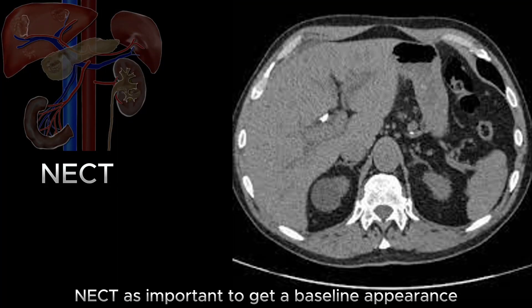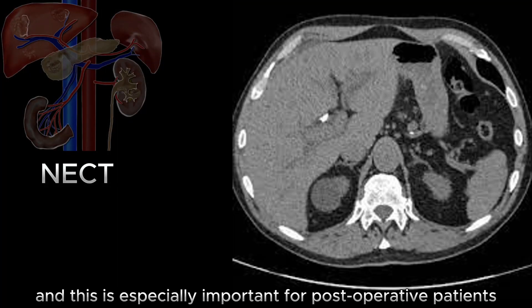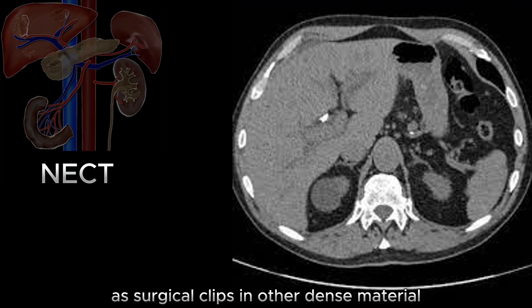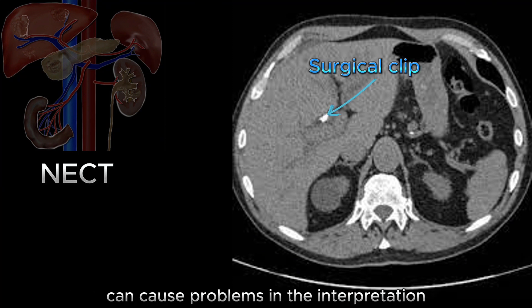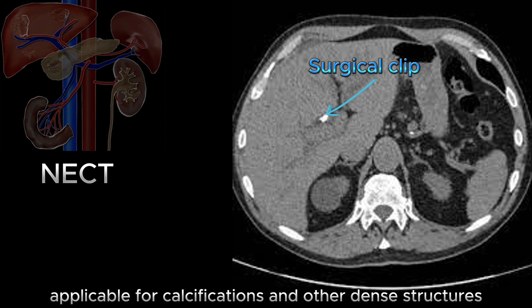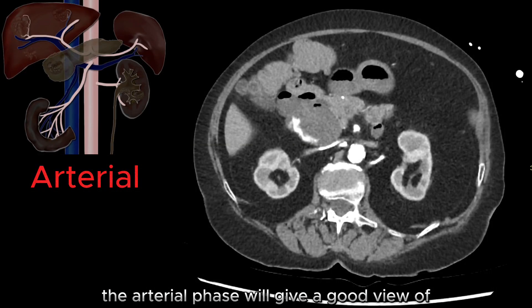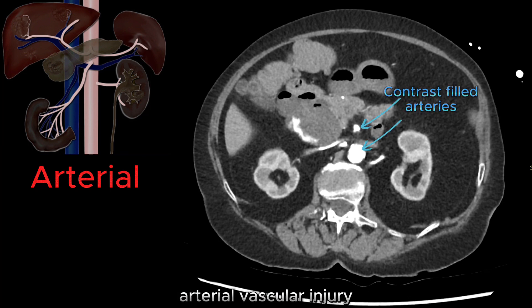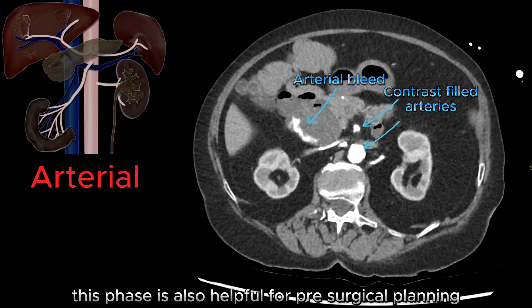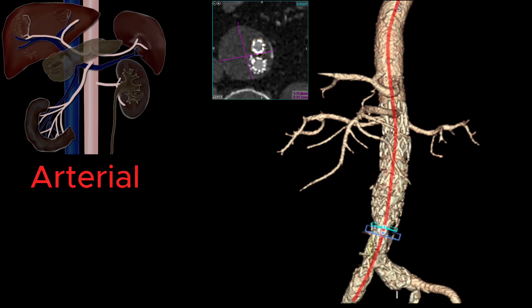Non-enhanced CT is important to get a baseline appearance, and this is especially important for postoperative patients, as surgical clips and other dense material can cause problems in the interpretation. This is also applicable for calcifications and other dense structures. The arterial phase will give a good view of the vascular anatomy, arterial vascular injury, and the potential source of arterial bleed. This phase is also helpful for pre-surgical planning when applicable.